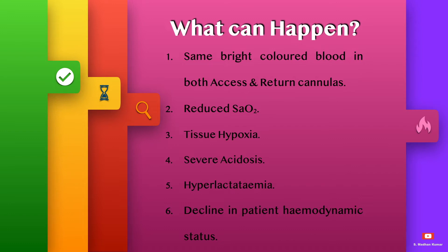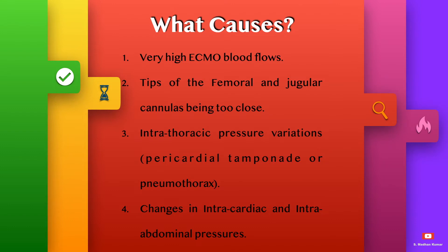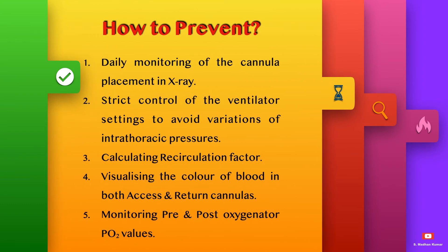Recirculation can ultimately lead to a decline in the patient's hemodynamic status. It can be caused by very high ECMO blood flows, and both the tips of the femoral and jugular cannulas being too close. Intrathoracic pressure variations can lead to pericardial tamponade or pneumothorax, which can ultimately lead to recirculation because of lower venous drainage, and changes in intracardiac and intra-abdominal pressures.